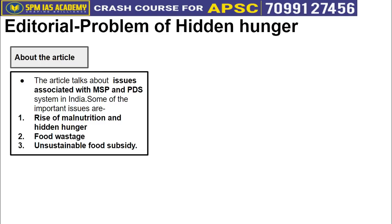These implementation challenges lead to three main issues: the problem of hidden hunger and malnutrition, food wastage, and unsustainable food subsidy.